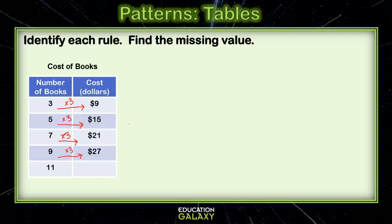That is it. That is my rule. The rule is to multiply by 3. Then, if I want to know what happens if I put an 11, I just have to multiply by 3. And, 11 times 3 is 33. So, it would be $33.